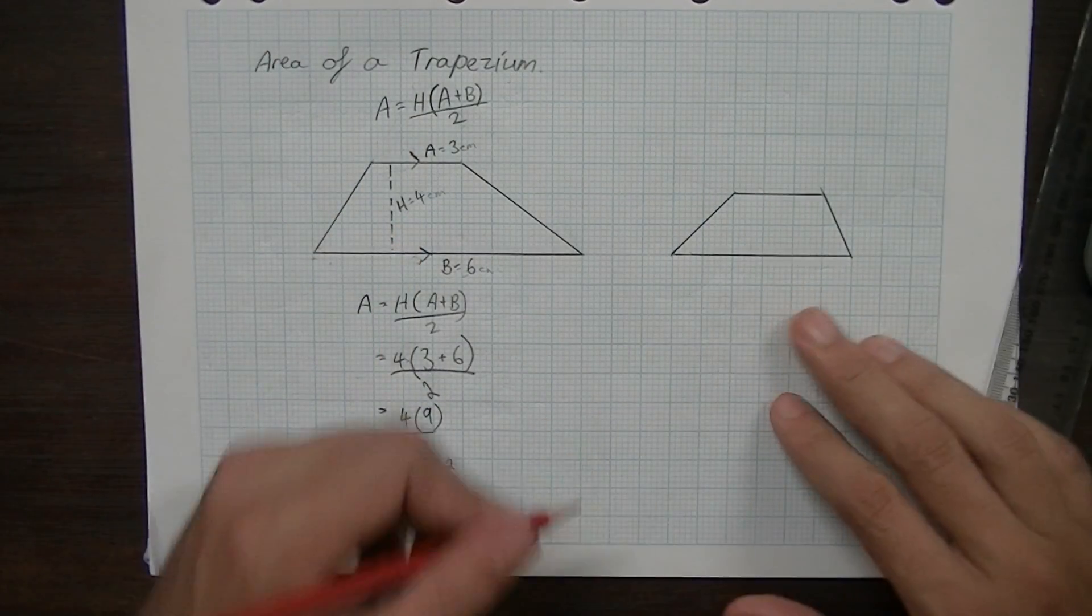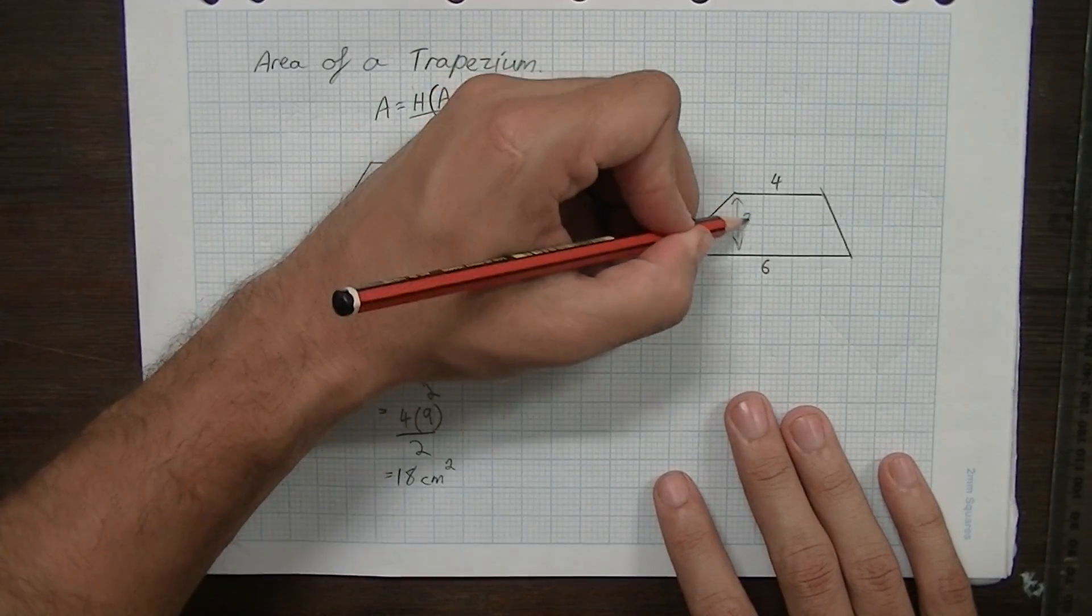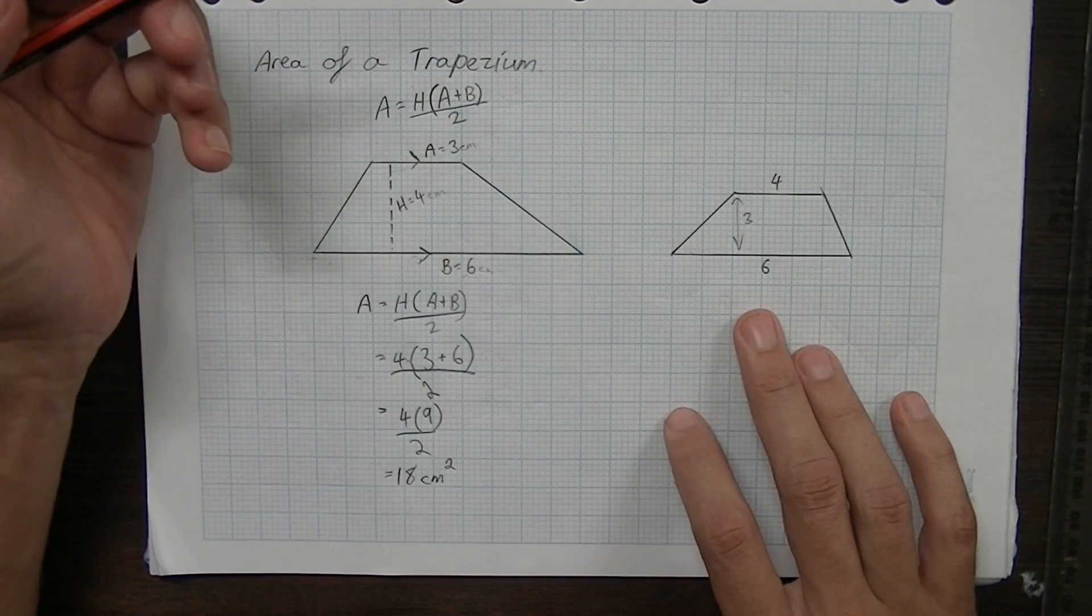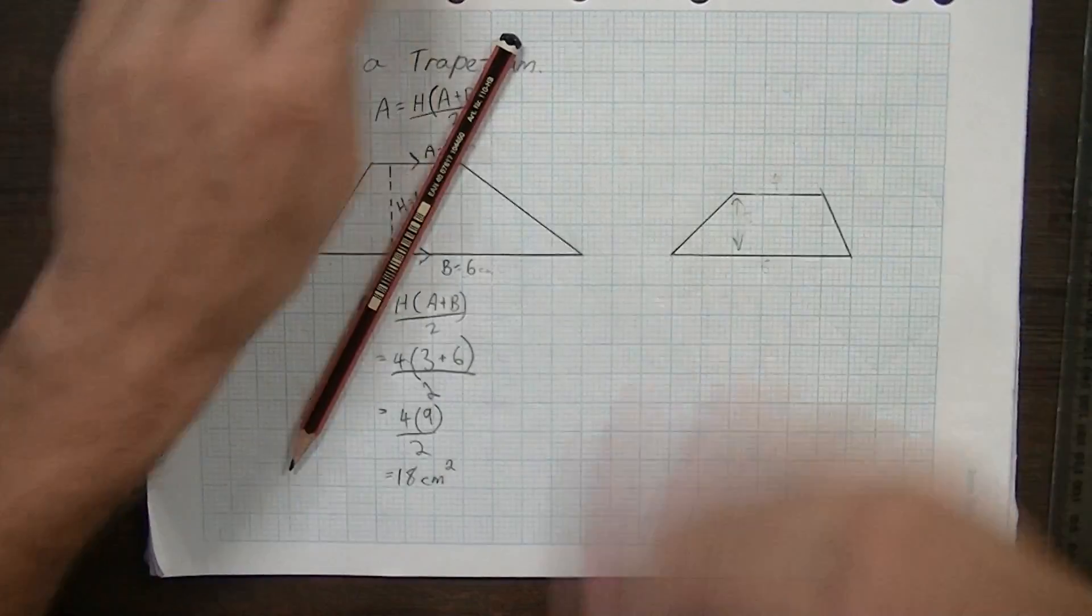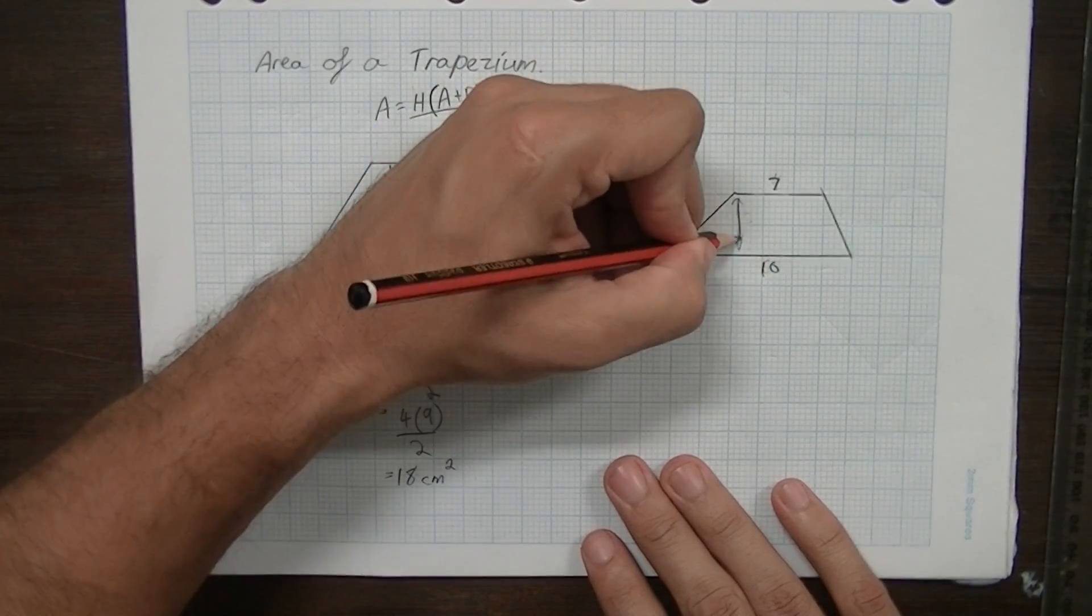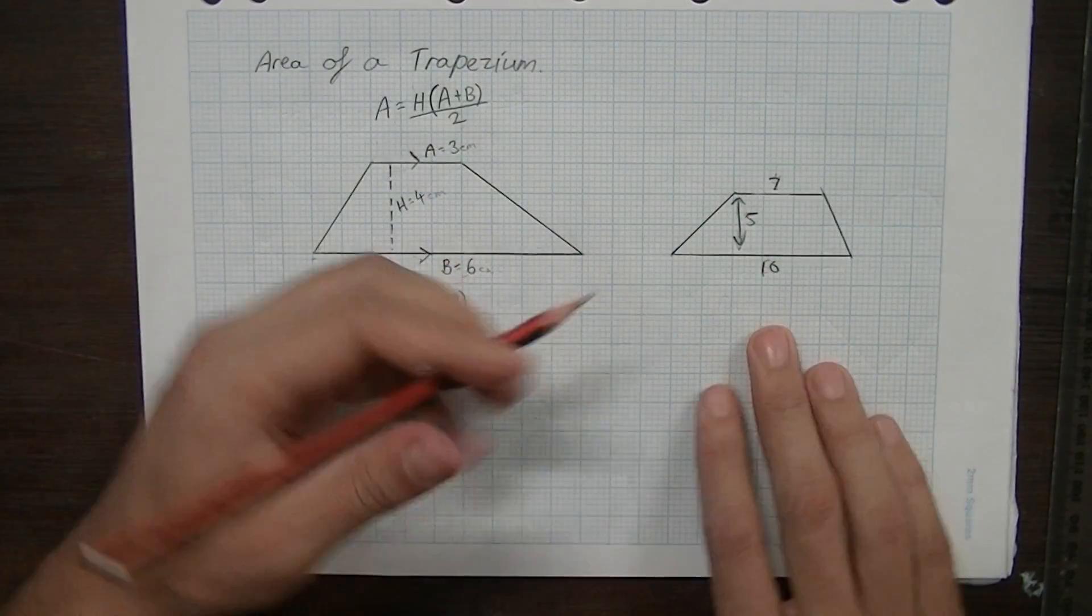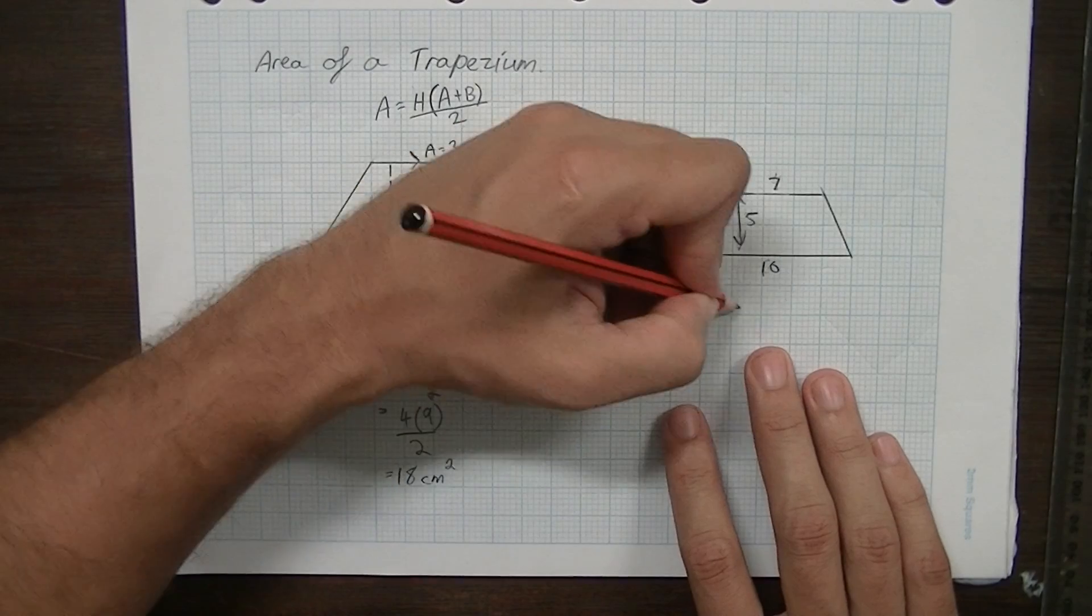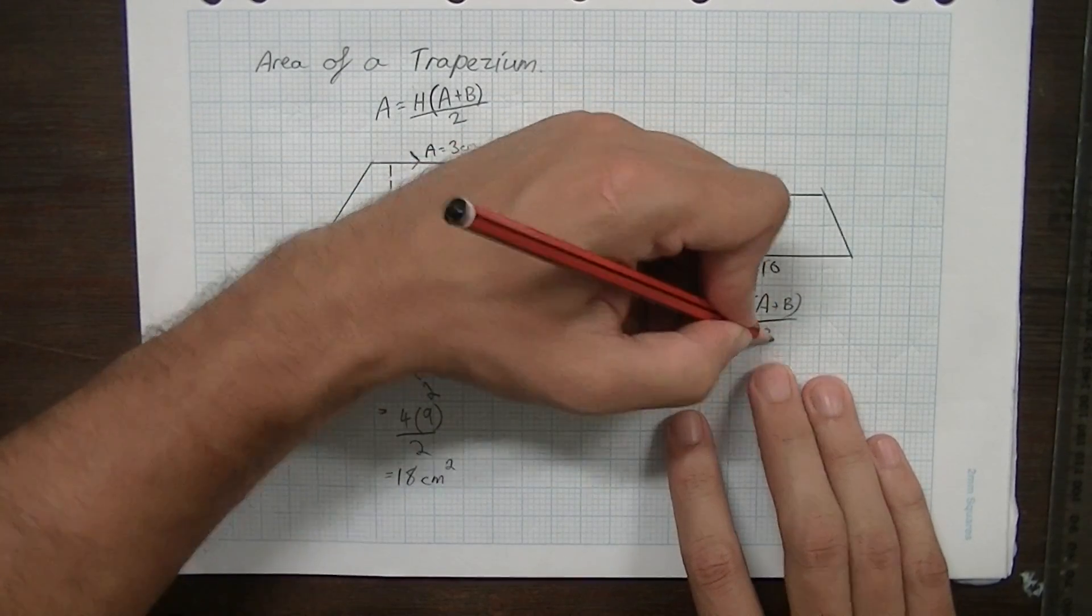Just quickly I'll run through one more. Better choose some different numbers. Let's call it 7, 10 and 5. So the formula area equals H, A plus B divided by 2.